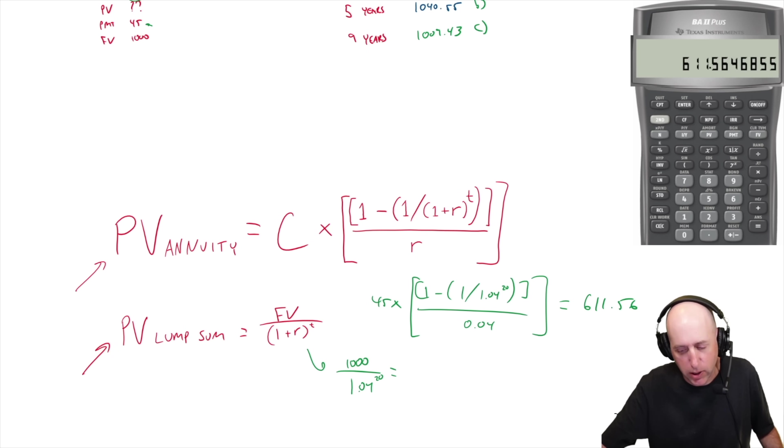What about the thousand dollars I get at the end of the bond? You go 1.04 to the power of 20, you divide a thousand by that. So 1 over X times a thousand, and that's worth 456.39. Add these two together. 611.56 plus 456.39, and we find the present value of our bond is 1067.95.